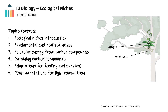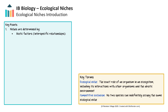These are some of the most important topics covered in the IB biology syllabus. An ecological niche is defined as the exact role and position a species has in its environment, including its interactions with other organisms and the abiotic environment.